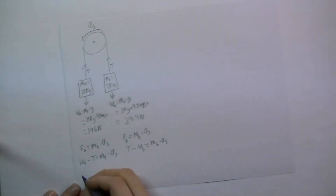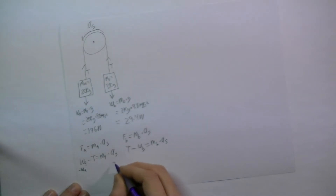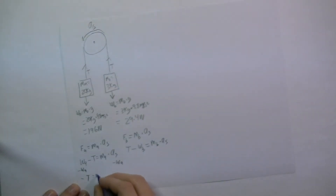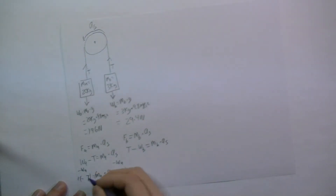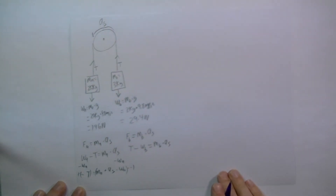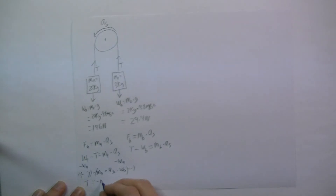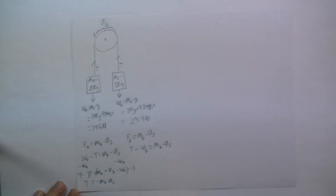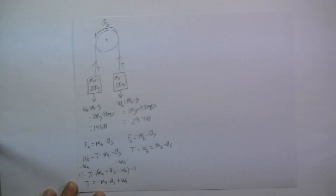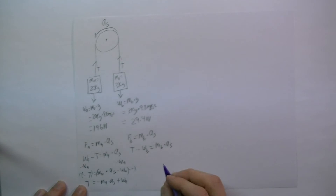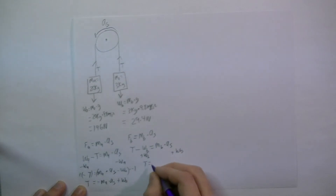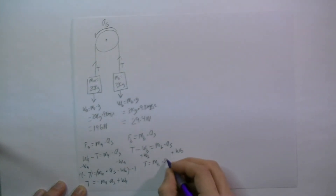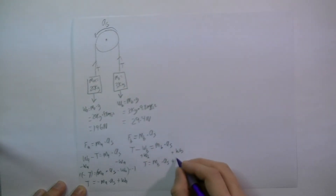Now we will solve each one of these equations for T. I will subtract the weight of A from both sides, and I'll get negative T equals the mass of A times the acceleration of the system minus the weight of A. I don't want this to be negative, so I will multiply both sides by negative 1, giving T equals negative M_A times A_S plus the weight of A. On the other side, I will add the weight of B to both sides, giving T equals M_B times A_S plus the weight of B.